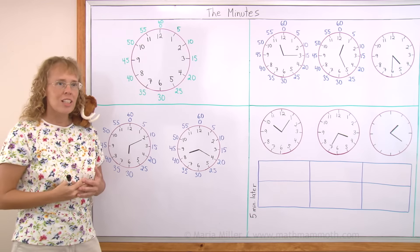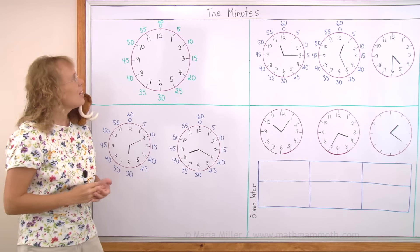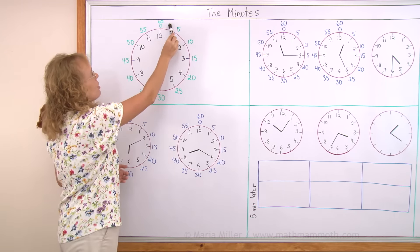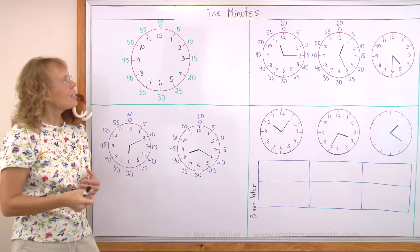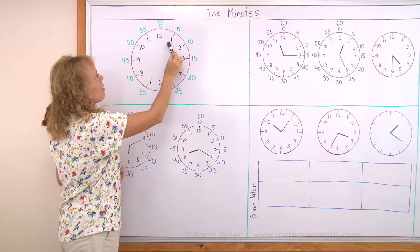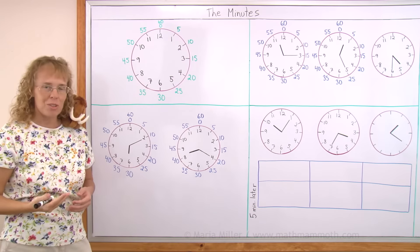You see, in normal clocks, these numbers for the minute hand are not shown. You have to know them. And they go from 0 all the way up to 60. And so for each number on the hour hand, we are going to count by 5s for the numbers for the minute hand.